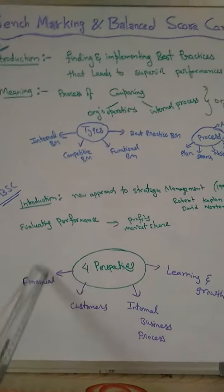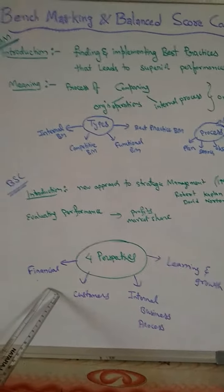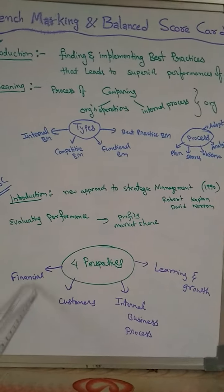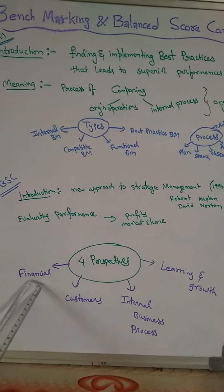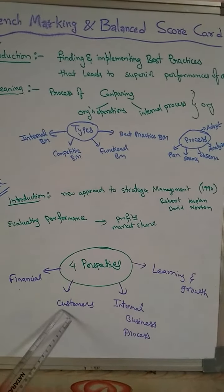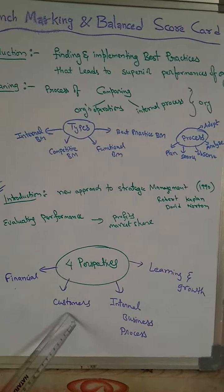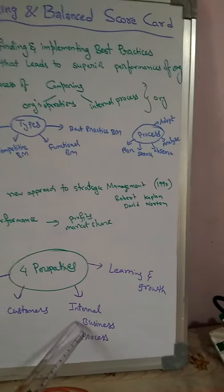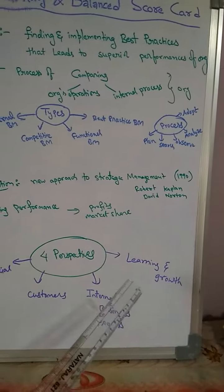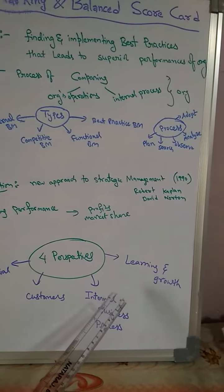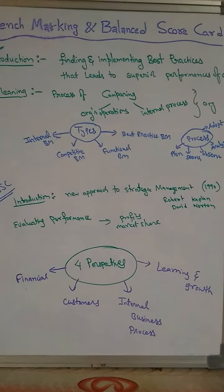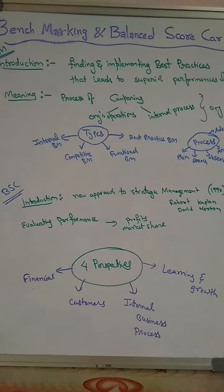Now, performance is evaluated using 4 perspectives. The first is financial — a firm looking to satisfy shareholders. The second is customers — how customers and companies are treated. The third is internal business process — the internal process is important. The fourth is learning and growth. These are the 4 perspectives of the balanced scorecard.